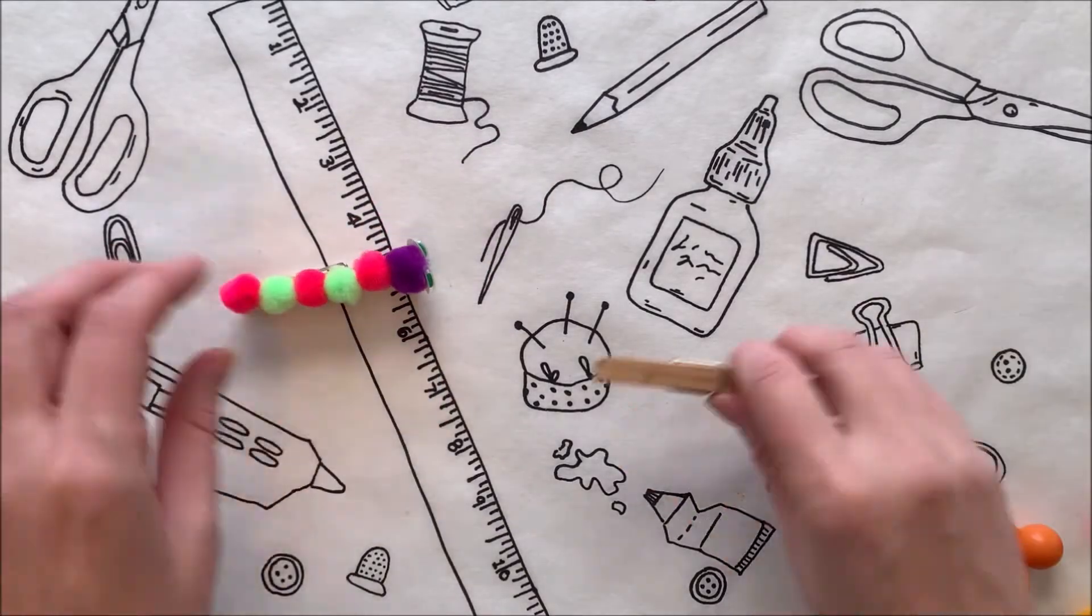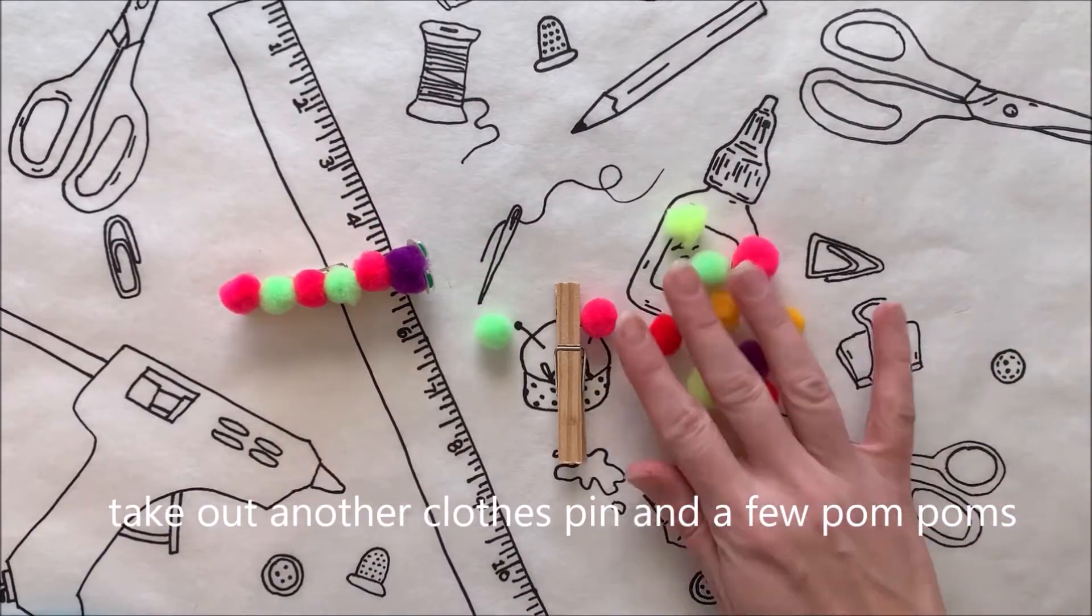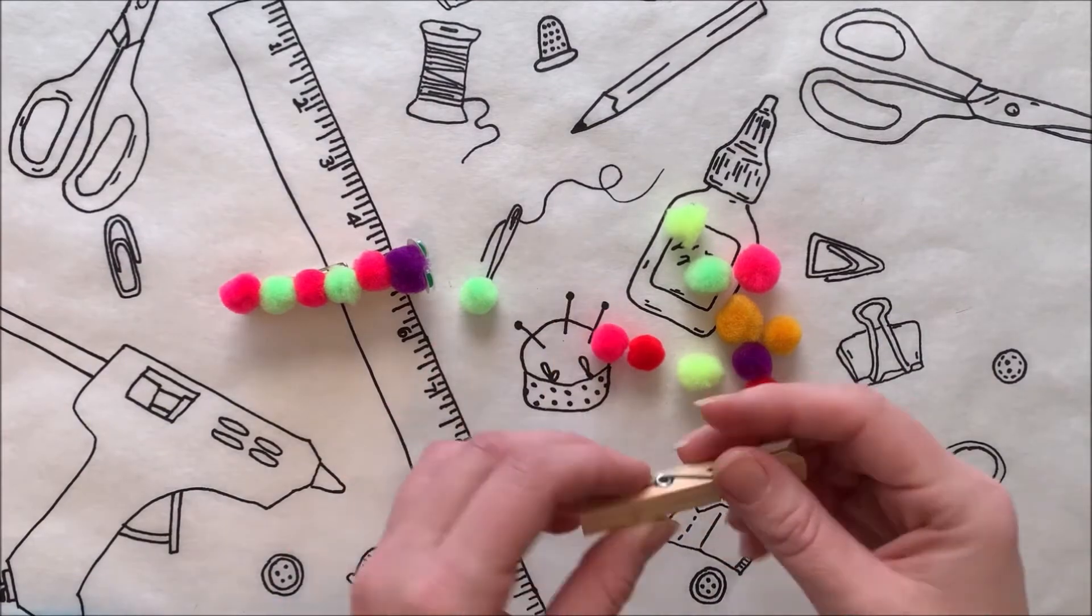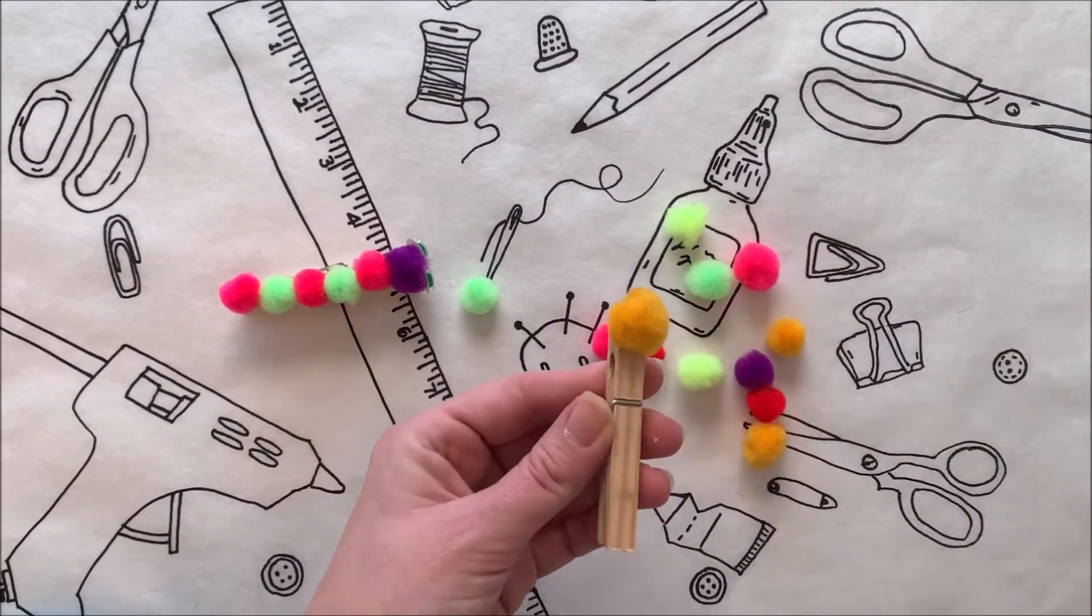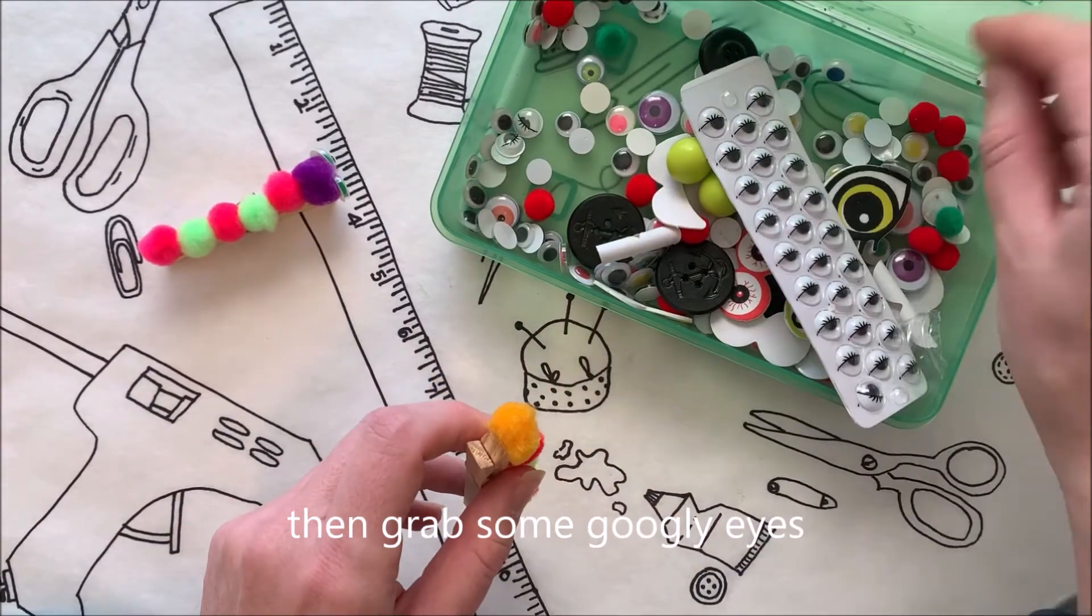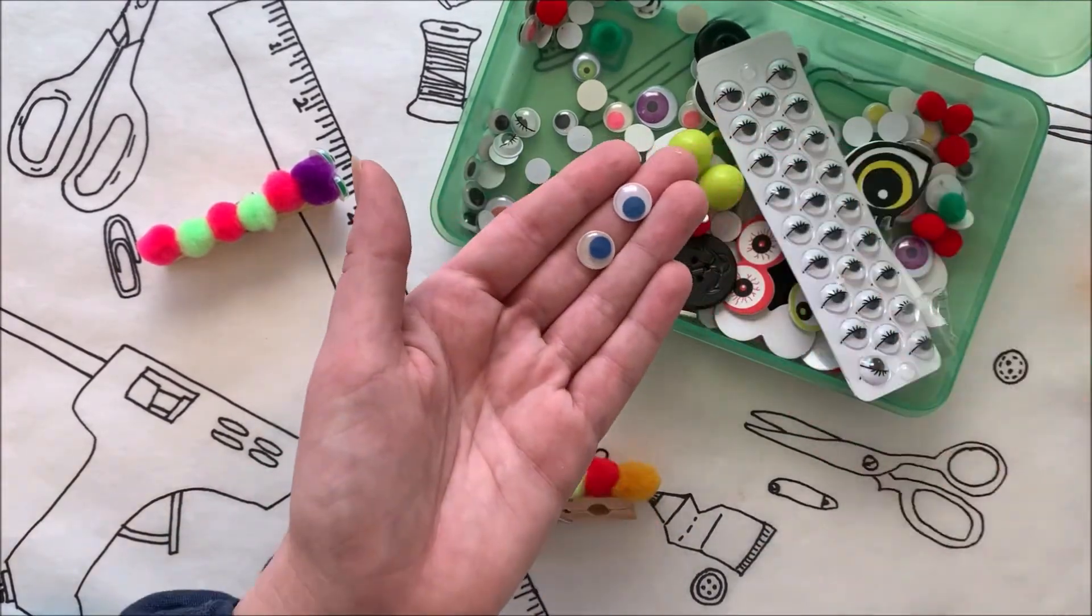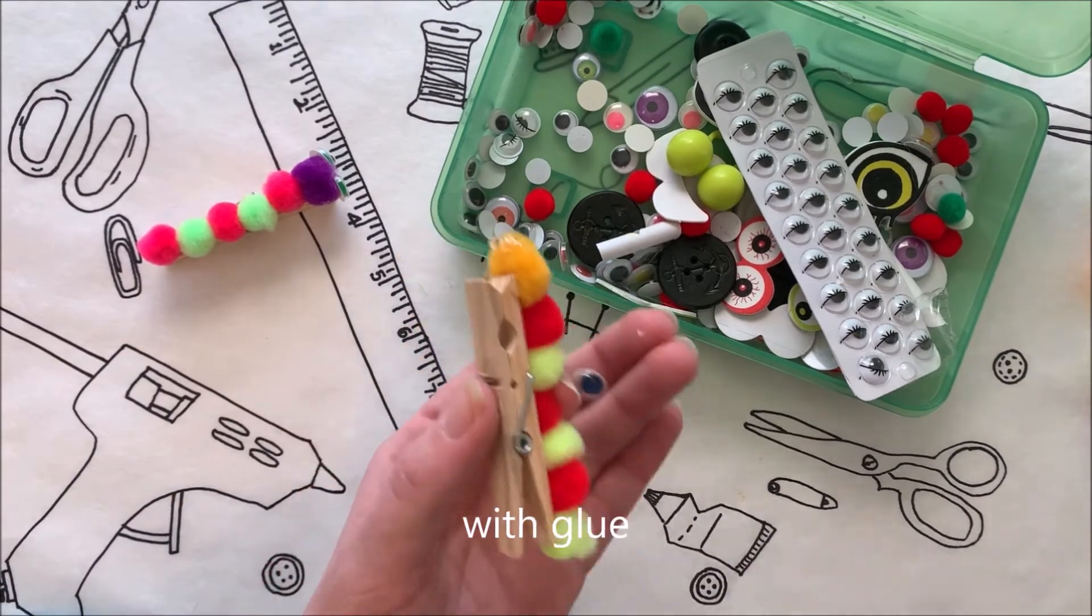Let's make some fuzzy caterpillars. Take out another clothespin and a few pom-poms. Add glue to the top of the pin and start attaching pom-poms in a line. Then grab some googly eyes and attach the front of the caterpillar with glue.